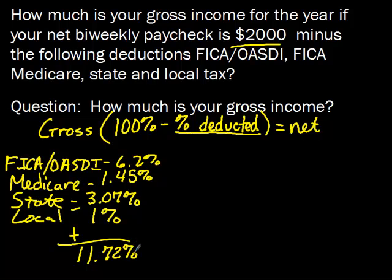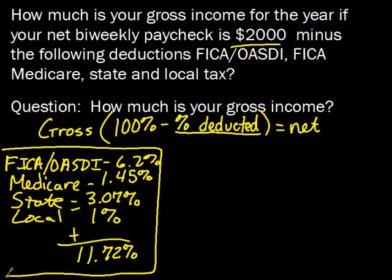11.72% doesn't seem like much, but that's because we're not working with federal tax in this problem. Federal tax usually comes close to 15 to 25, even 30% of your paycheck. So it seems like only a little is being taken out because federal tax isn't involved here. We know the total being deducted is 11.72%, and we know the net pay, so we can find our gross pay.